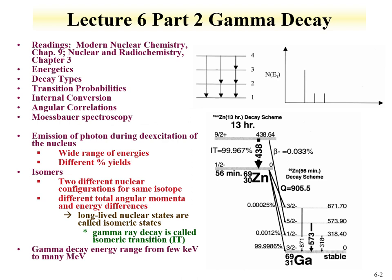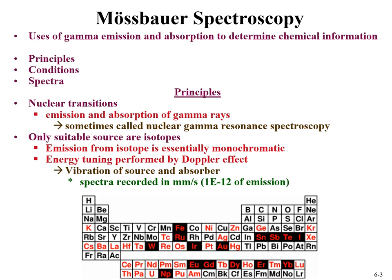In this lecture we're going to discuss Mössbauer spectroscopy, which uses gamma emission and absorption to determine chemical information about compounds that contain radionuclides. We'll cover the principles of Mössbauer spectroscopy, the conditions necessary — fundamentally you need solids — and something about the spectra that results.